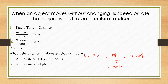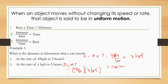For letter B, the rate is x kilometers per hour and the time is 3 hours. Using d = rt, we have x km/hr times 3 hours. The hours cancel, giving us 3x kilometers as the distance.